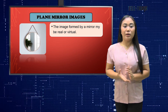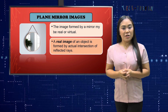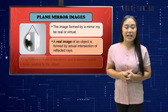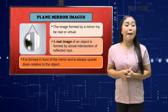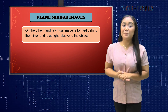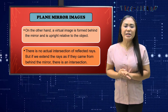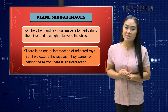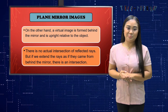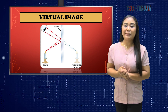The image formed by a mirror may be real or virtual. A real image of an object is formed by actual intersection of reflected rays. It is formed in front of the mirror and is always upside down relative to the object. A virtual image is formed behind the mirror and is upright relative to the object. There is no actual intersection of reflected rays, but if we extend the rays as if they came from behind the mirror, there is an intersection. This intersection is not formed by actual reflected rays, but only by the extended rays.